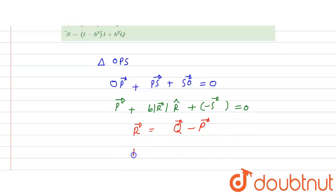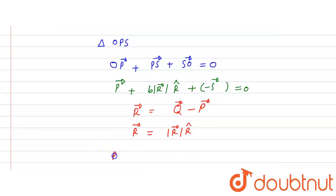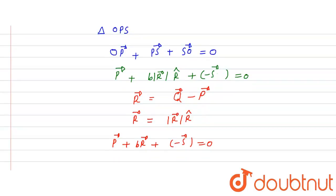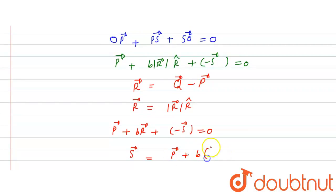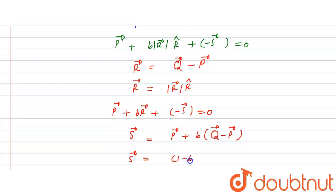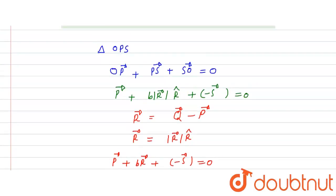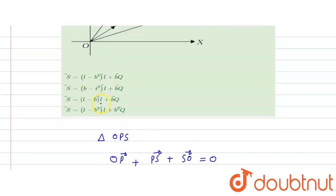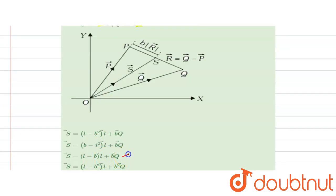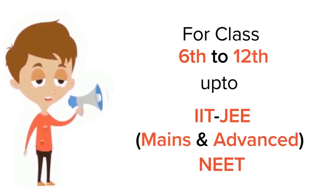So r vector equals mod of r times r-hat. We can write: p vector plus v·r plus minus s vector equals zero. Therefore s equals p vector plus v times (q minus p) vector. After calculating, s vector equals (1 minus v)·p vector plus v·q vector. Checking the options, the third option is correct. Thank you.